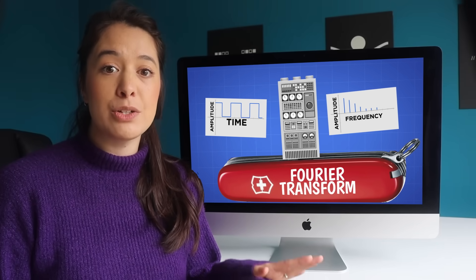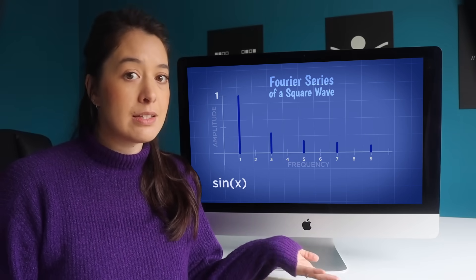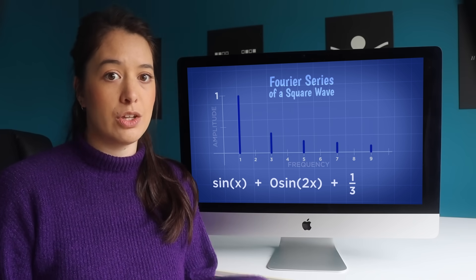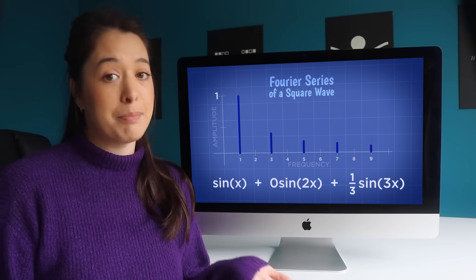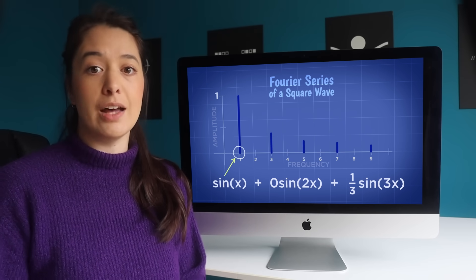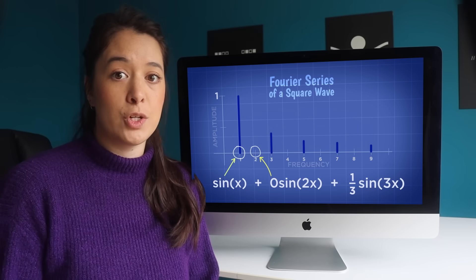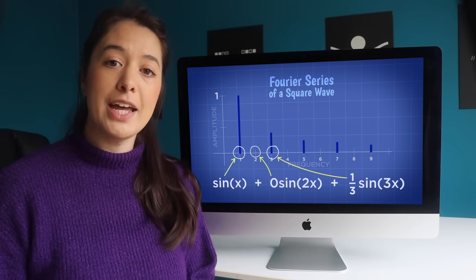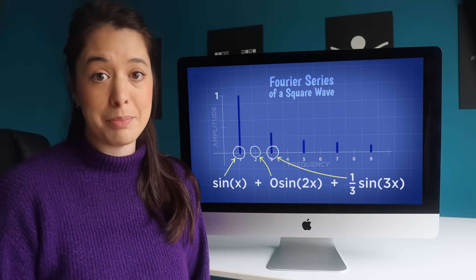So if I go back to our first few terms of the Fourier series of a square wave, we expect sine x, zero sine 2x, and one-third sine 3x. This new function, which is dependent on frequency, gets large at the frequency associated with sine x, is zero at the frequency associated with sine 2x, and has a spike at the frequency associated with sine 3x, though of a smaller amplitude.